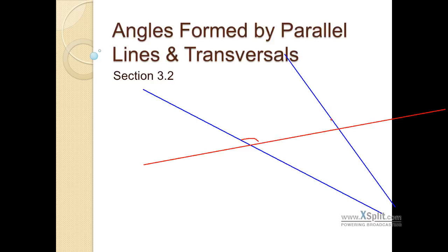Anything that are on the same side of the transversal and both in the interior are going to be same side interiors. Different sides of the transversal, both in the interior, are alternate interiors. And then anything that is outside and outside on opposite corners is going to be called alternate exteriors.